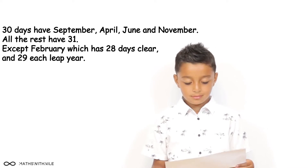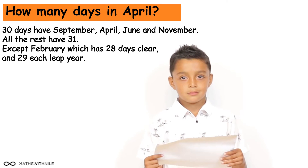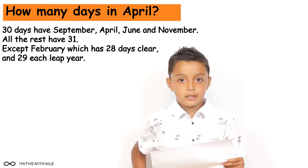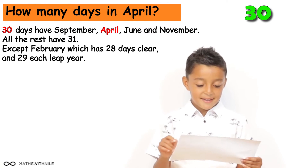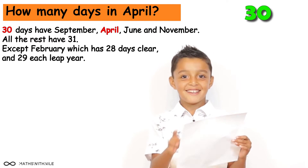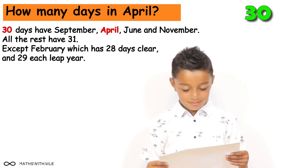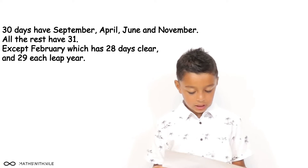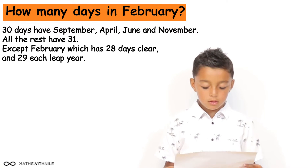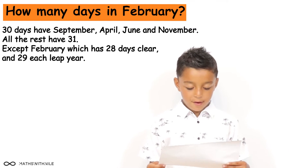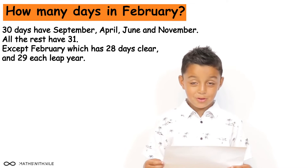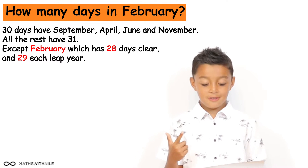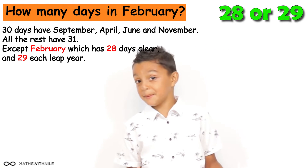So do you know how many days there are in April? 30. How do you know? Because it says it on there — it's on the list of the 30-day months. And how many days are there in February? 28 days in a normal year and 29 each leap year.